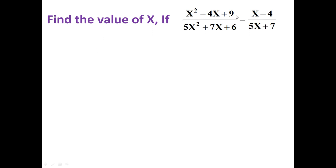If x square minus 4x plus 9 divided by 5x square plus 7x plus 6 is equal to x minus 4 divided by 5x plus 7. We have to find out the value of x.